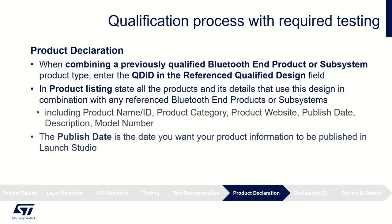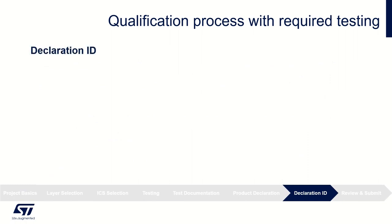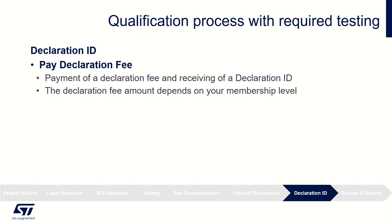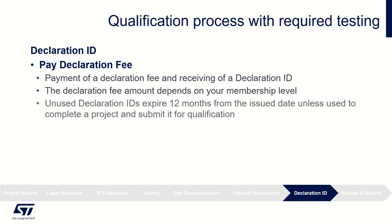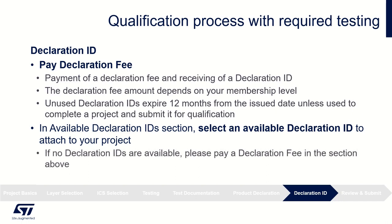Notice that the publish date is the date you want your product information to be made public in Launch Studio — no later than 90 days after the date you submit your project. Then, similarly as for the first scenario, pay a declaration fee. You will receive a declaration ID. The declaration fee amount depends on your organization's membership level. Declaration fees are not refundable — unused declaration IDs expire in 12 months from the date of issuance unless used to complete a project. Select an available DID to attach to your project, or pay a new declaration fee if none are available.